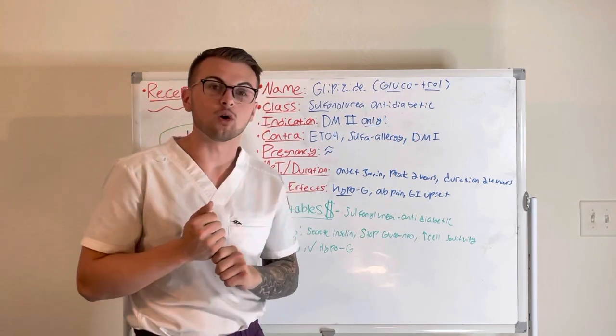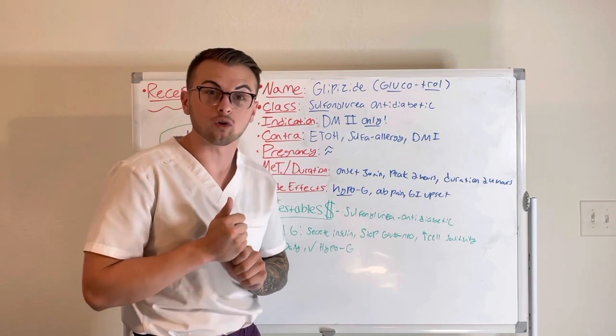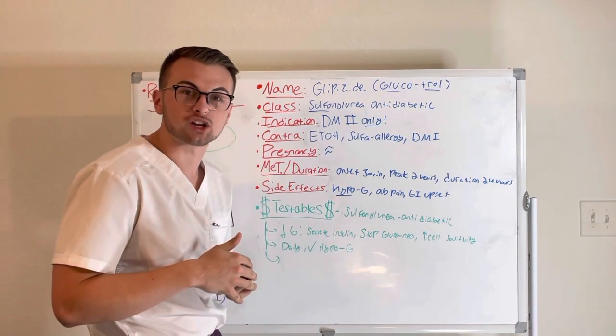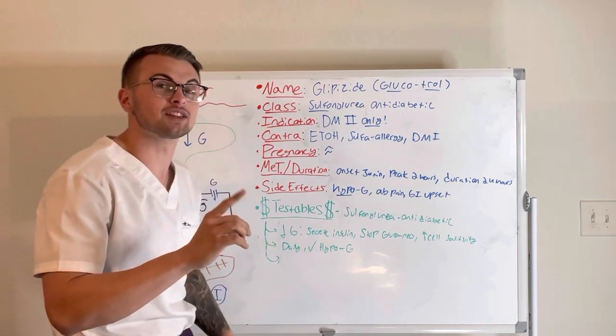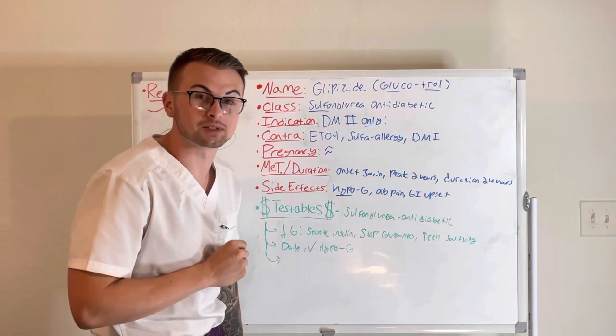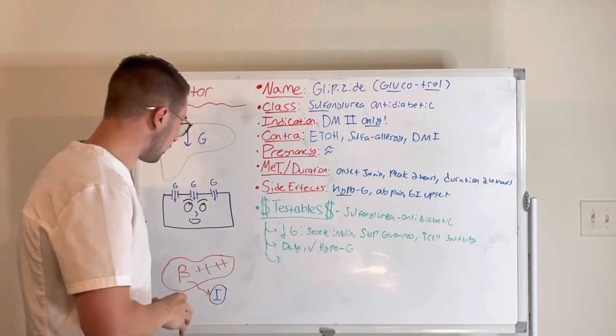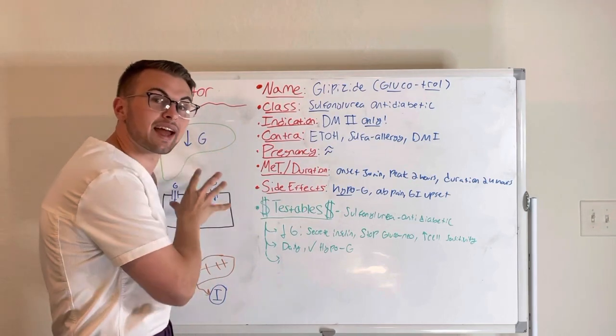But what we need to know is the glipizide triangle, three important mechanisms of action. Notice that there are three I's in glipizide. It works on our pancreas, our liver, and our cells.